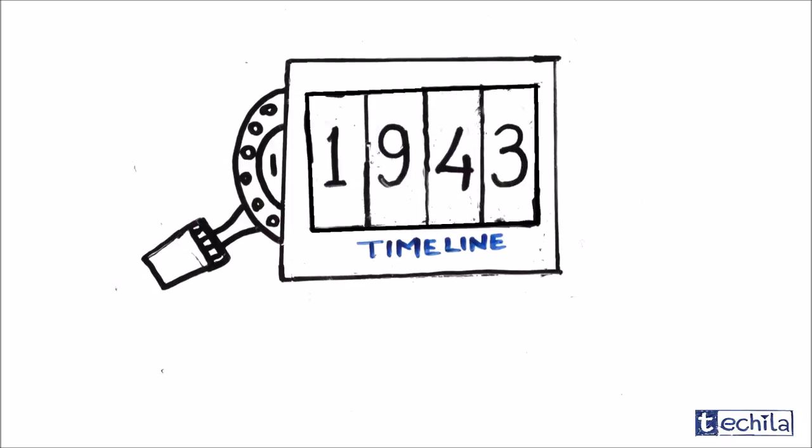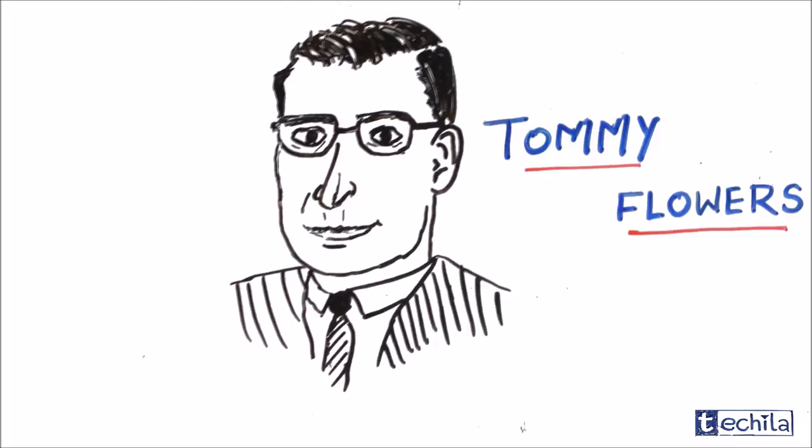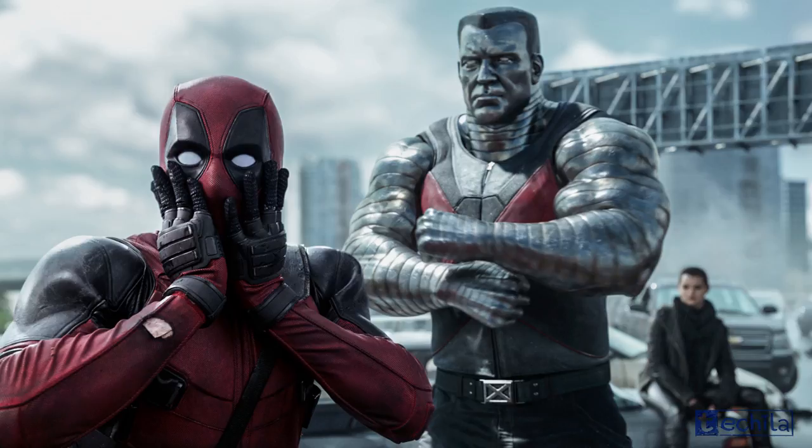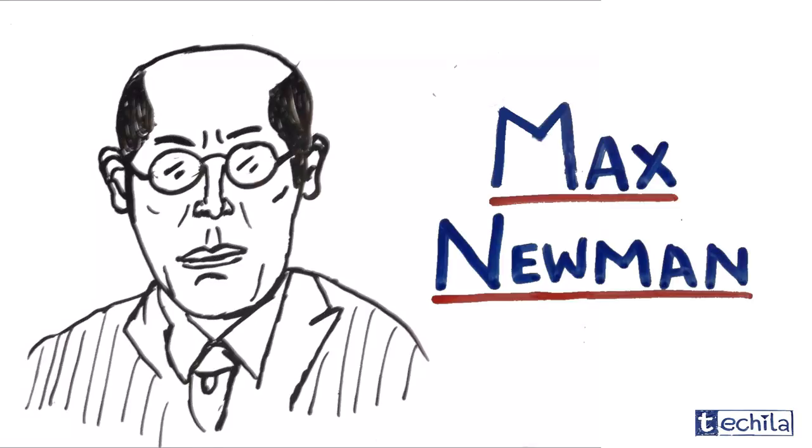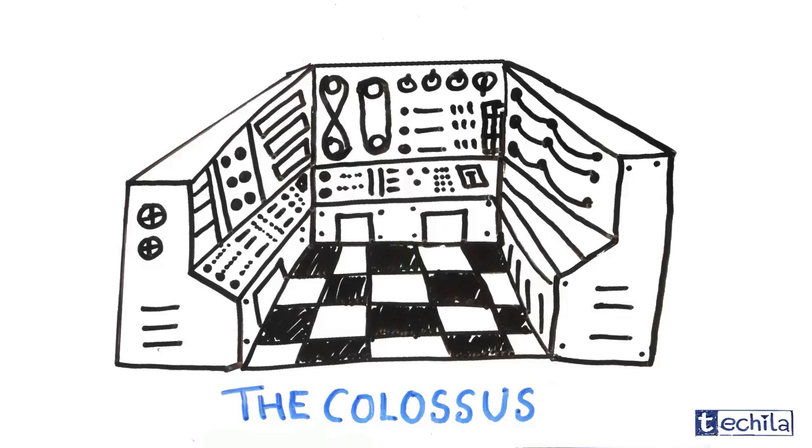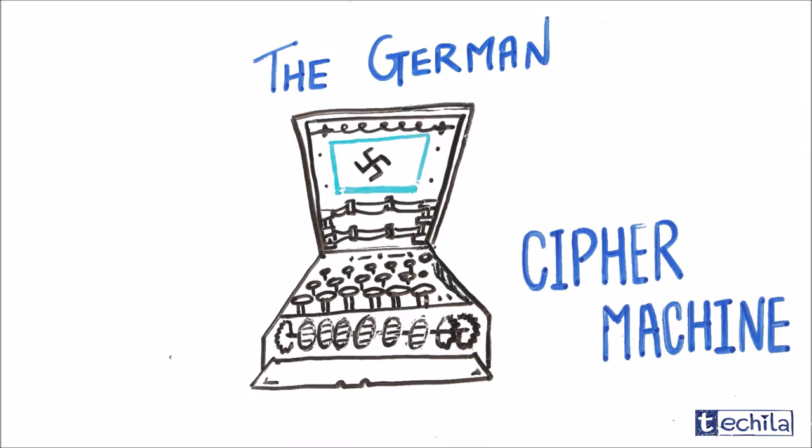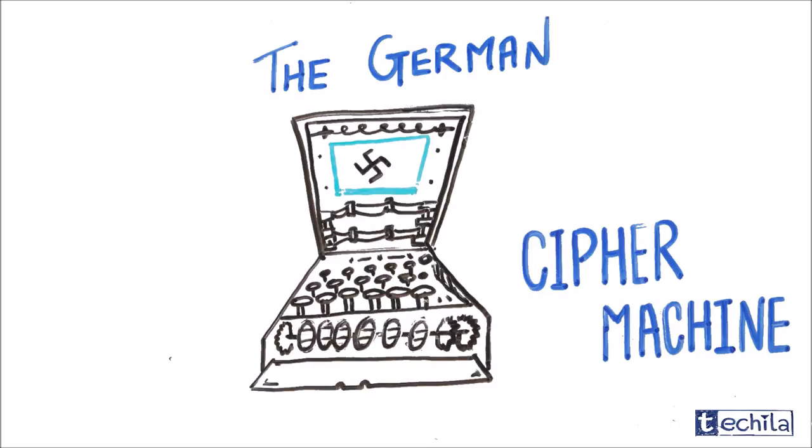In December 1943, telephone engineer Tommy Flowers designed Colossus to solve a problem posed by mathematician Max Neumann. Colossus was the first electronic digital programmable computing device and was used to break the German ciphers during World War II.